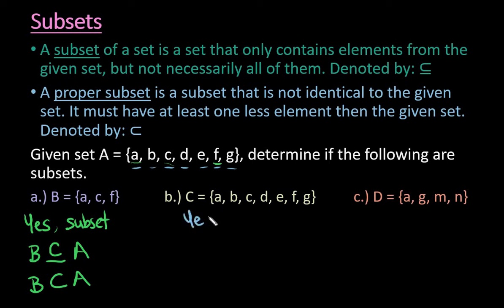But based on the definition, we could say that yes, this is a subset, but it is not a proper subset. We can say that C is a subset of A. We could say that C is not—if you draw a line through it, that means is not—a proper subset of A. So while it is a subset, it is not a proper subset.